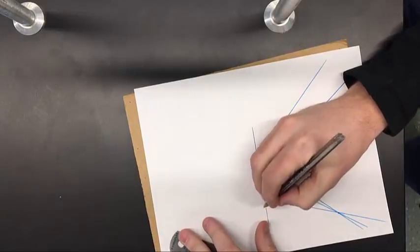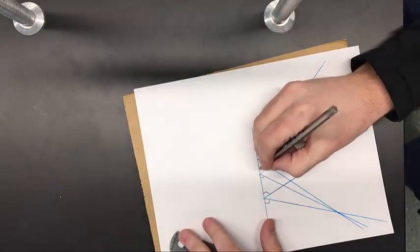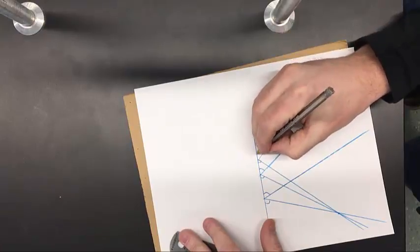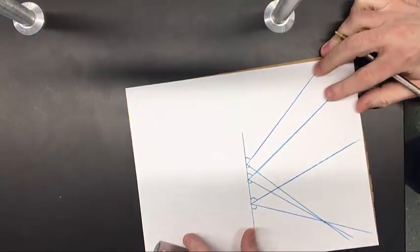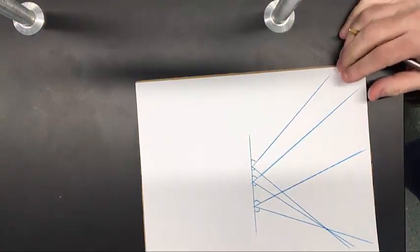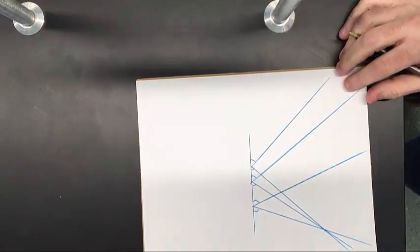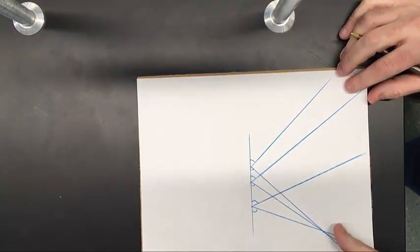Lastly, we want to mark the angles that these tracings make with the mirror itself, and then eventually you'll grab a protractor and begin to measure these once you have this diagram done.